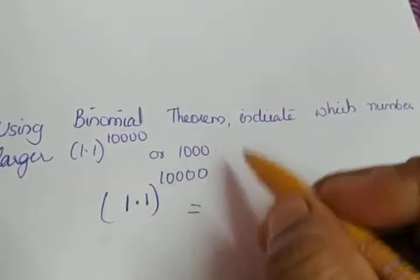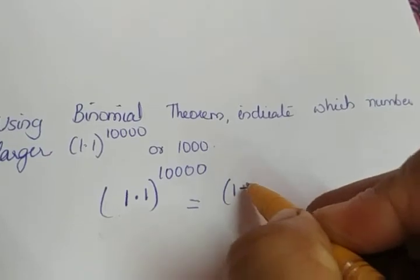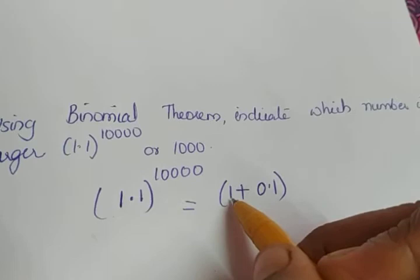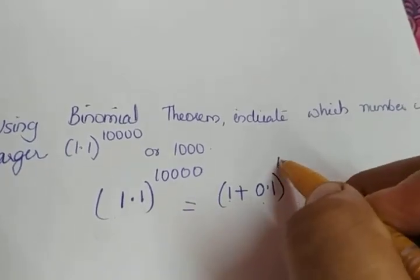Instead of 1.1, I can write the number as 1 plus 0.1. 1.1 can be written as 1 plus 0.1 raised to 10,000.